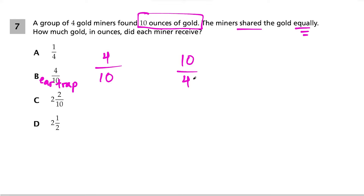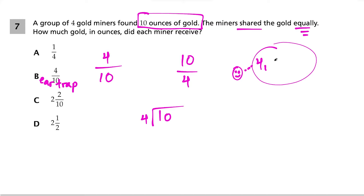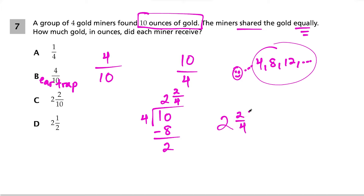Using long division, 4 goes into 10 with a quotient of 2 and remainder 2. We write the remainder as 2/4 and reduce by dividing numerator and denominator by 2, giving us 2 and 1/2. So each miner receives 2 and 1/2 ounces of gold. Our solution is choice D.